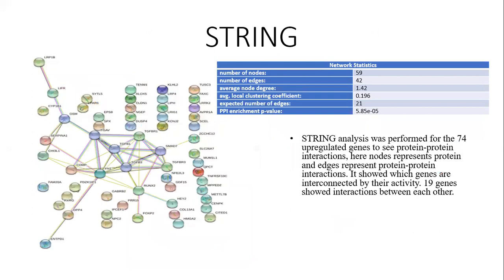STRING, the Search Tool for the Retrieval of Interacting Genes/Proteins, is a database that identifies protein-protein interactions between the above-mentioned genes. STRING analysis was performed for the 74 upregulated genes common to at least two datasets to examine protein-protein interaction. 19 proteins showed interaction between each other. Here, nodes represent proteins and edges represent protein-protein interactions, showing which genes are interconnected by their activity. The number of nodes is 59 and the number of edges is 42.